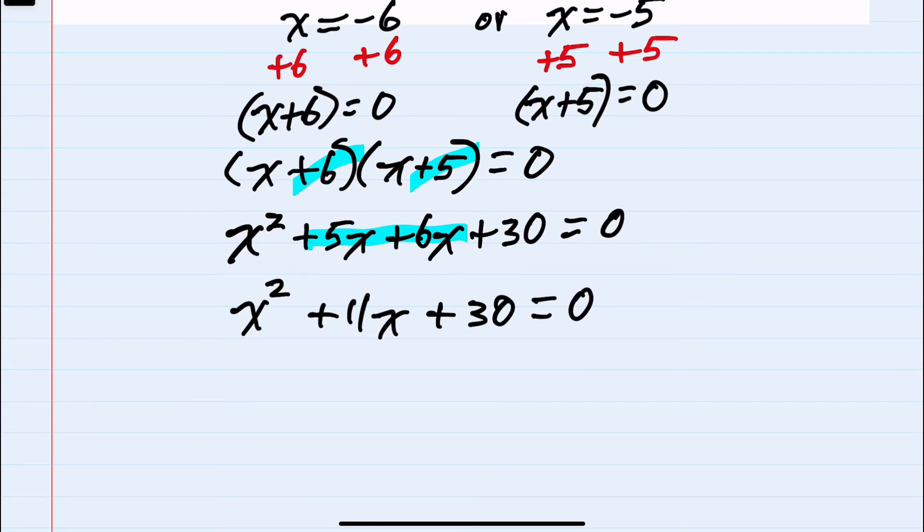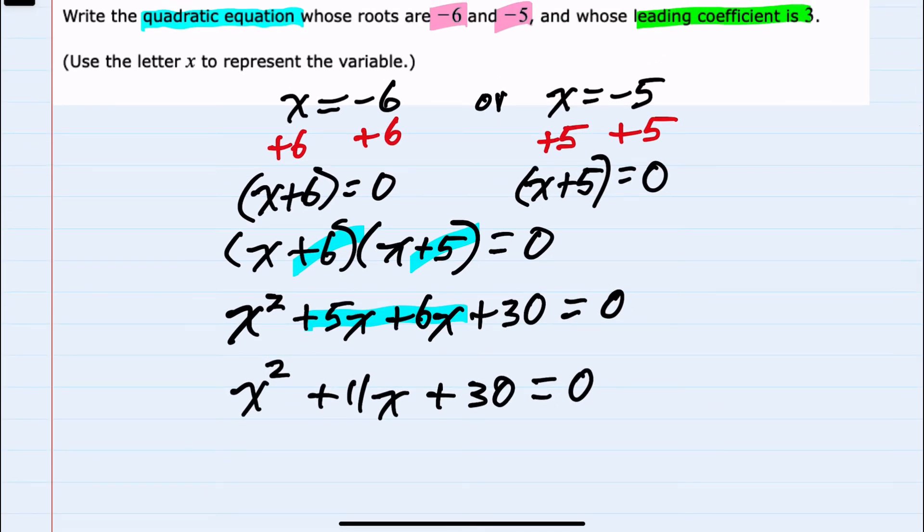We have a quadratic equals 0 and we have the roots. However, we're told that the leading coefficient is to be 3, and so far our leading coefficient is just 1.